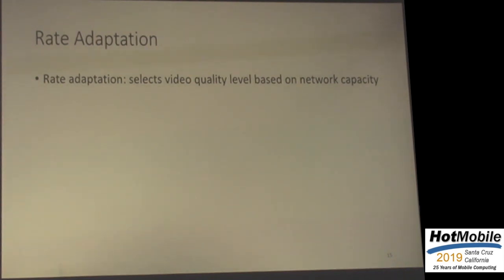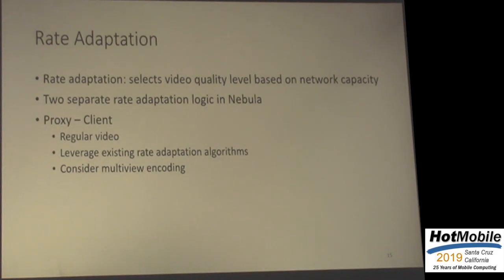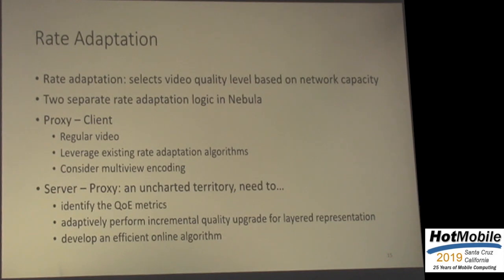The third idea is rate adaptation — a well-explored topic in regular video streaming that selects video quality level based on network capacity. In our system, we have two separate loops for rate adaptation. One is between the client and proxy, where we transmit regular transcoded videos and plan to leverage existing rate adaptation algorithms while also considering multi-view encoding. The second loop — more interesting — is between the proxy and the server, where we apply rate adaptation to volumetric content. This is largely uncharted territory, requiring research on identifying the right QoE metrics, how to adaptively perform incremental quality upgrades for layered representations, and making the algorithm efficient.